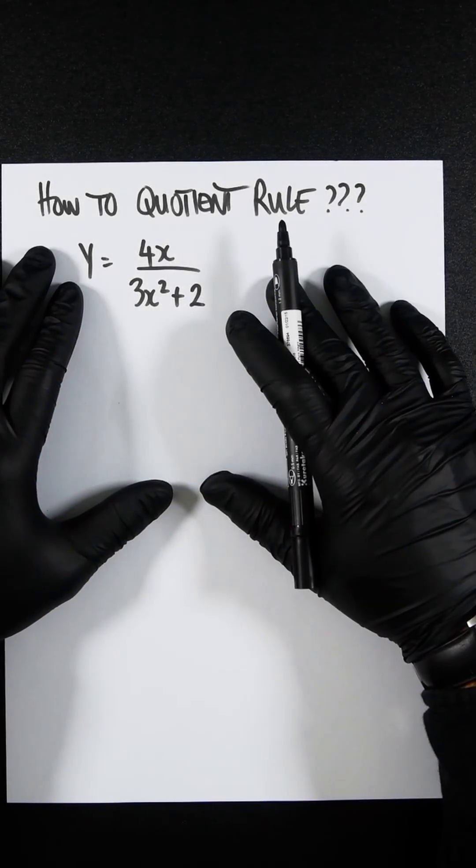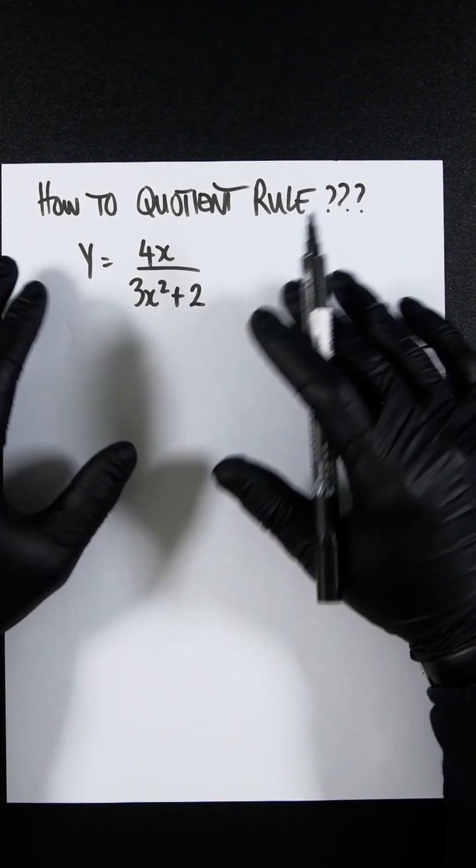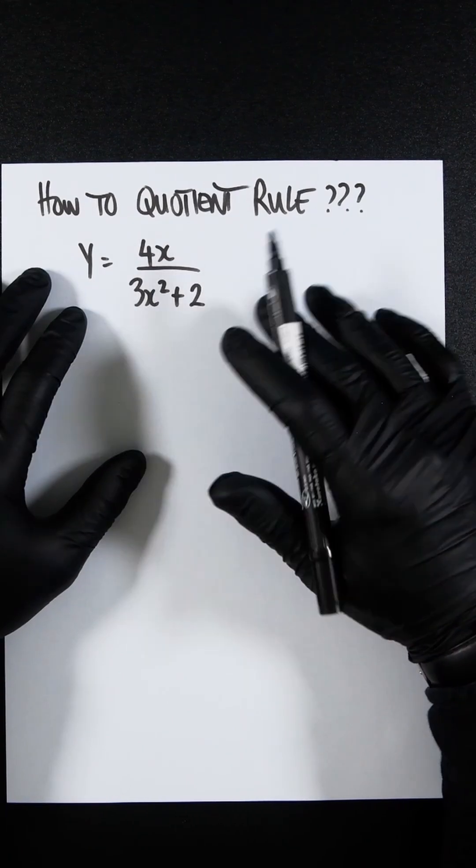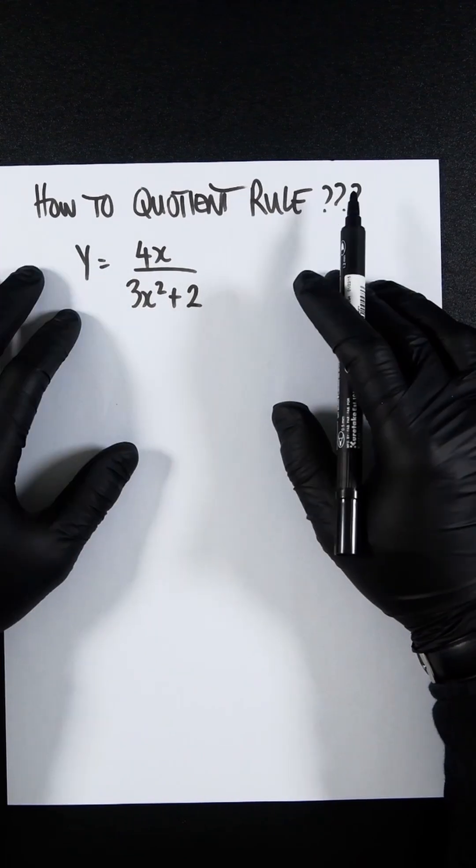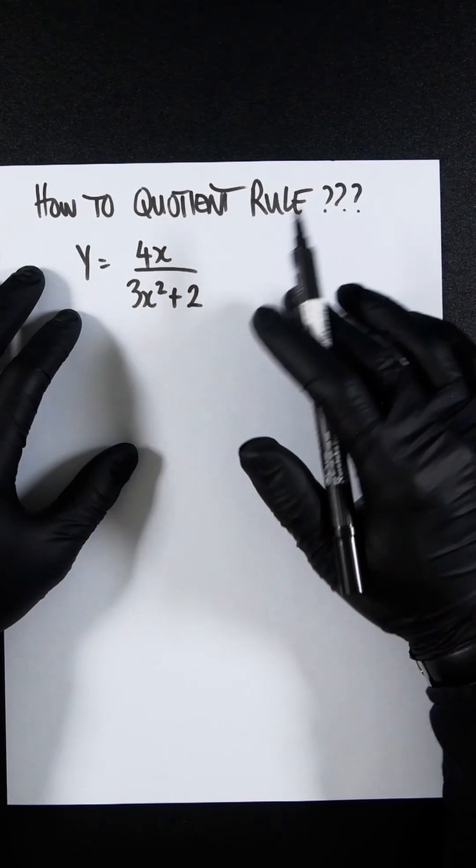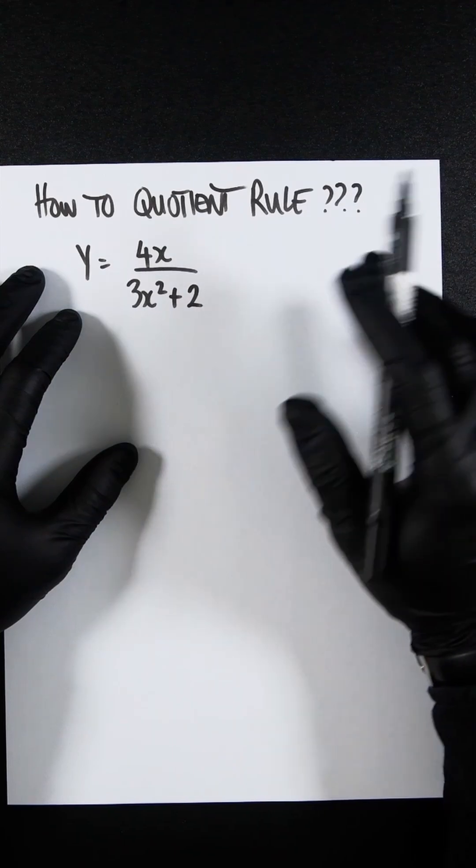You should be able to differentiate by now. However, you can't really use the chain rule as it is because the equation is represented as a fraction. So whenever you're dealing with fractions that you need to differentiate, you need to use the quotient rule formula.